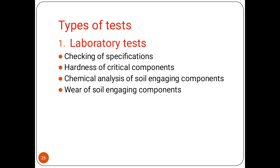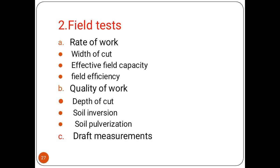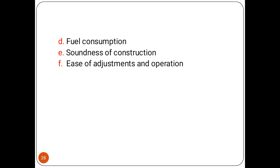The types of tests include laboratory tests and field tests. For laboratory tests, parameters considered are: checking of specification, checking the hardness of critical components, doing chemical analysis of soil-engaging components, and checking the wear of soil-engaging components. For field tests, parameters include: width of cut, effective work capacity, field efficiency, quality of work, depth of cut, soil inversion, soil pulverization, draft measurement, fuel consumption, and soundness of construction.